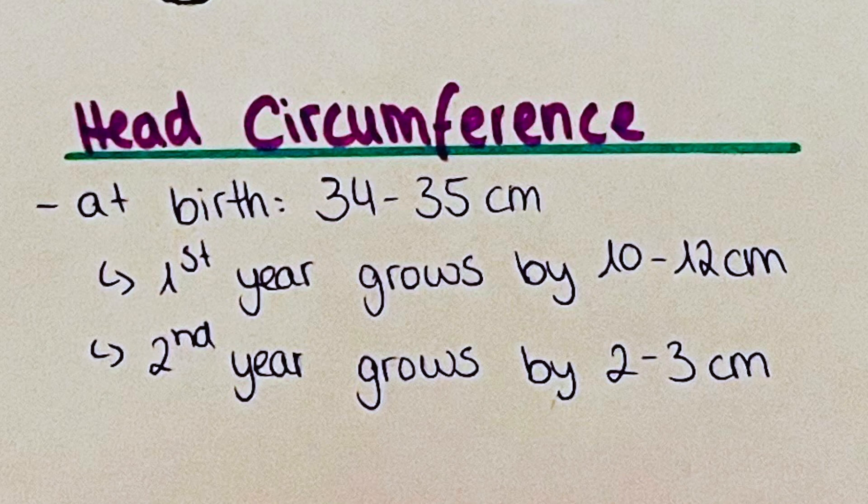Just after birth, the normal head circumference is 34 to 35 cm. The first year it grows around 10 to 12 cm, so around 1 cm a month. The second year much less, so normally 2 to 3 cm, and then it slowly increases in size until around puberty.